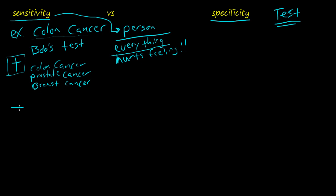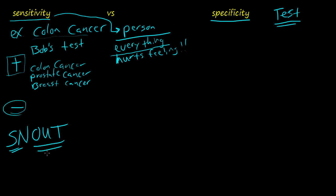If it's a negative result, then you know you don't have colon cancer, prostate cancer, or breast cancer. It's a very good test, and there's a mnemonic here called SNOUT. SNOUT: sensitivity, if it's negative, helps you rule out a condition. We're talking about high sensitivity in this case.